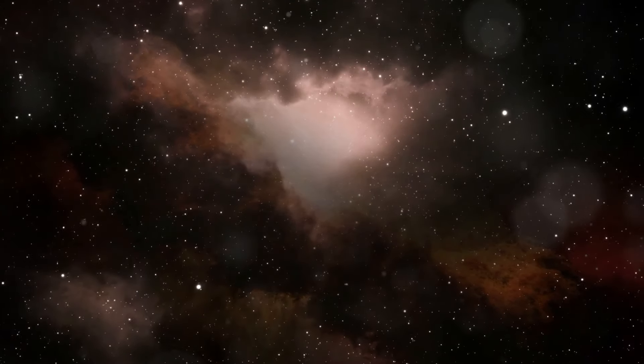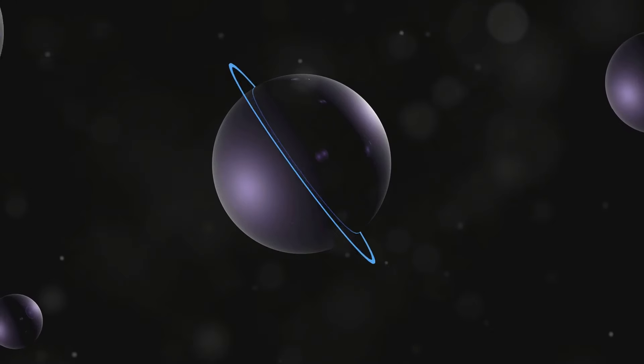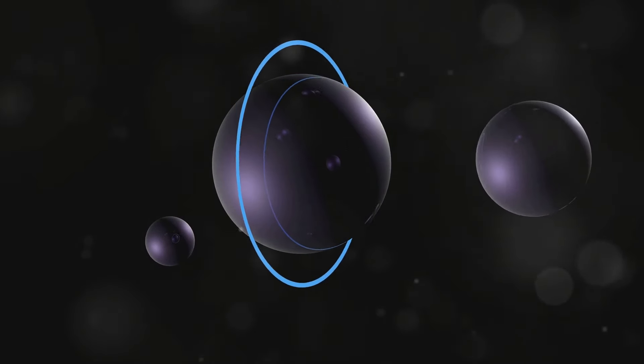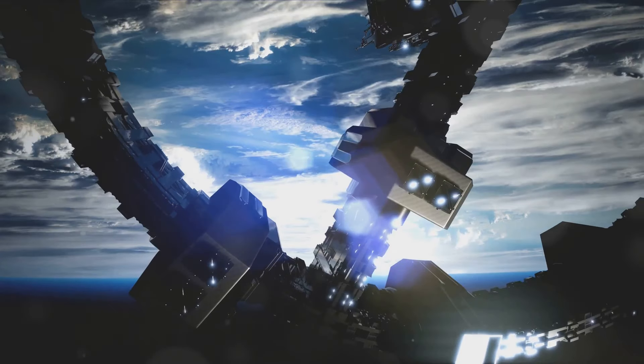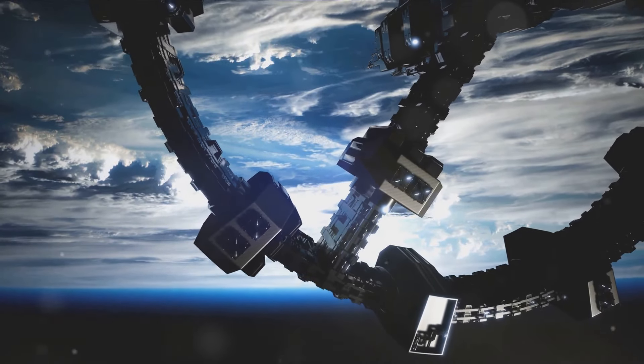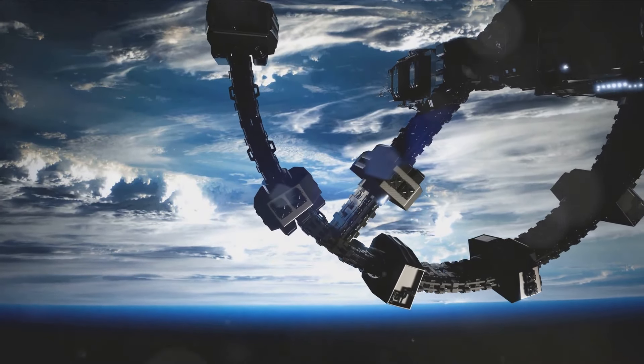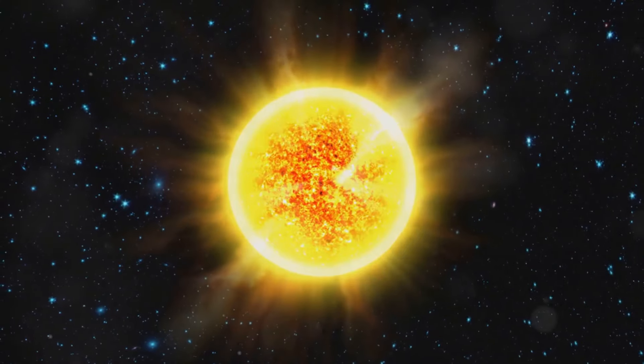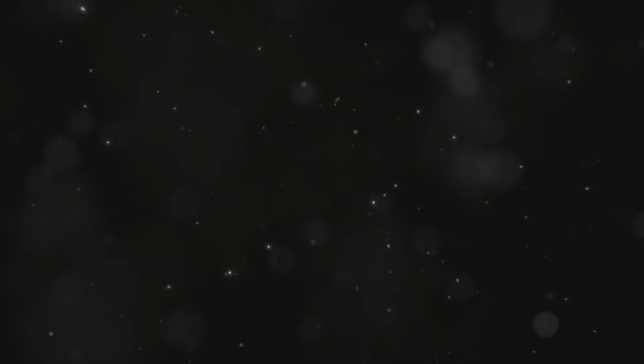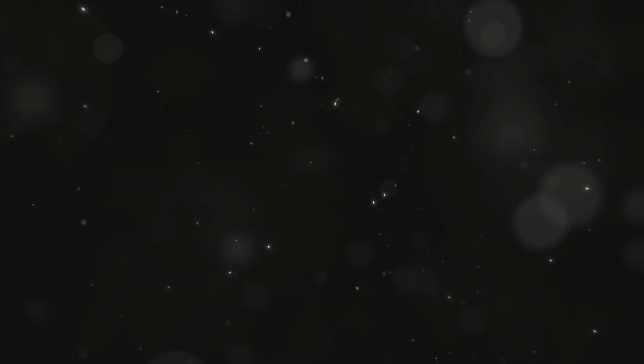Imagine a star so large that if it were placed at the center of our solar system, its surface would extend beyond the orbit of Jupiter. This, my friends, is the awe-inspiring scale of UY Scuti, a star so colossal that it challenges our very understanding of the cosmos. Its radius is estimated to be over 1,700 times that of our sun, a size so vast it's almost impossible to comprehend. To put this into perspective, if you were to shrink our sun down to the size of a basketball, UY Scuti would be a sphere larger than the London Eye, dwarfing everything in its vicinity.